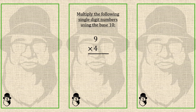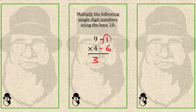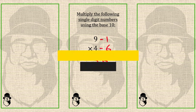Here 9 is 1 far from 10, so we write minus 1. And 4 is 6 far from 10, so we write minus 6. We can either do this subtraction: 4 minus 1 is 3 — that is the left part of the answer. Or we can do 9 minus 6, that will also give us 3. For the right part, we multiply these complements: 1 times 6 is 6. So 9 times 4 is 36.